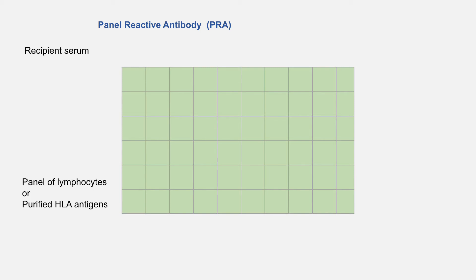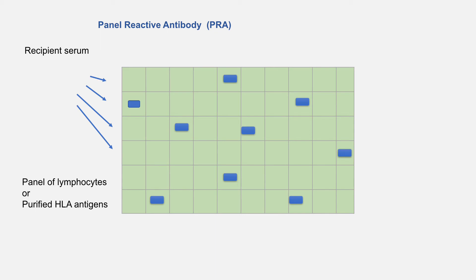We add recipient serum to each of these chambers, then add complement and fluorescent dye. A positive reaction means the person has antibodies against that particular person's HLA antigens. In this case, if we have nine positive reactions, the PRA of this person is 9 out of 60, or 15 percent. That means this person has HLA antibodies to 15 percent of the population, or 15 percent of potential donors.